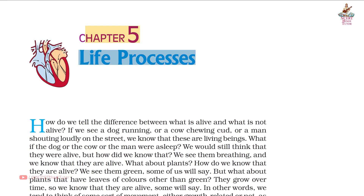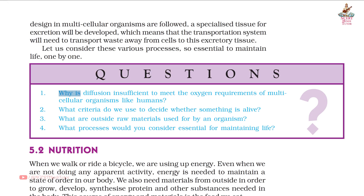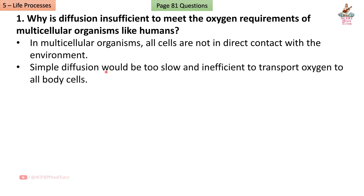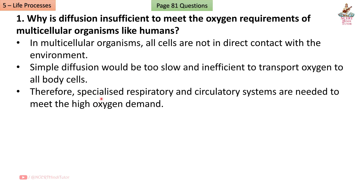Chapter 5 Life Processes, Question Answers from Class 10th Science, Page 81. Question 1: Why is diffusion insufficient to meet the oxygen requirements of multicellular organisms like humans? Answer: In multicellular organisms, all cells are not in direct contact with the environment. Simple diffusion would be too slow and inefficient to transport oxygen to all body cells. Therefore, specialized respiratory and circulatory systems are needed to meet the high oxygen demand.